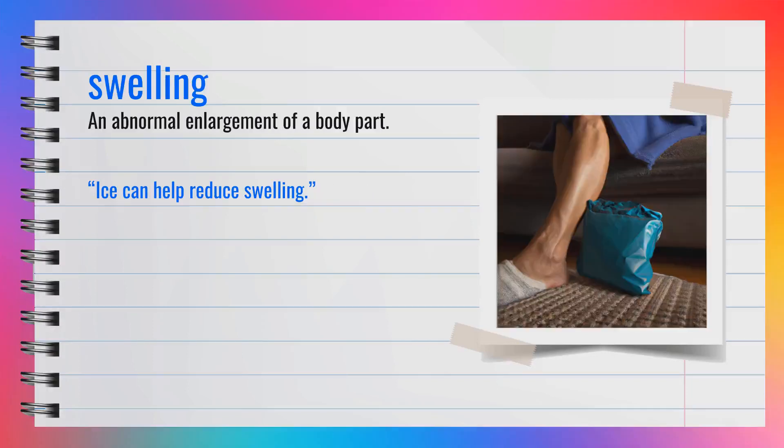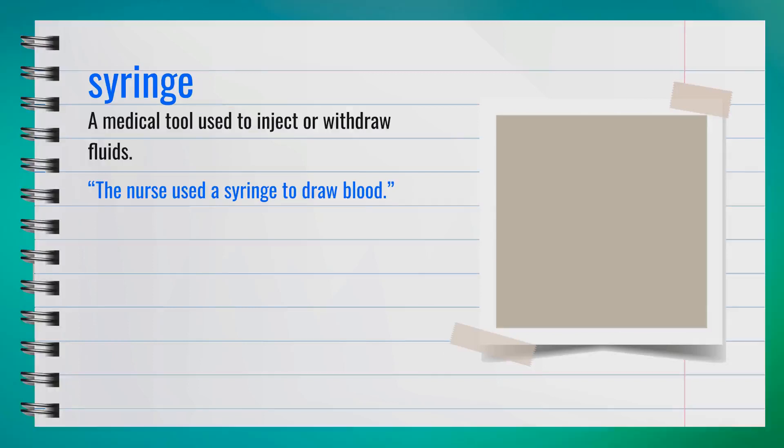The word swelling, spelled S-W-E-L-L-I-N-G, is a noun. It refers to an abnormal enlargement of a body part. For example, ice can help reduce swelling. In summary, swelling means a part of your body has enlarged abnormally.